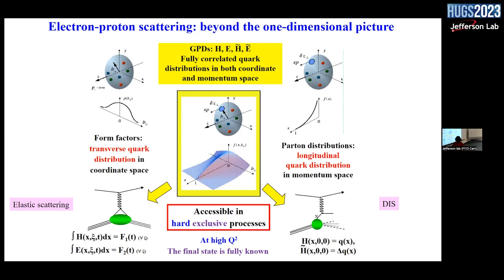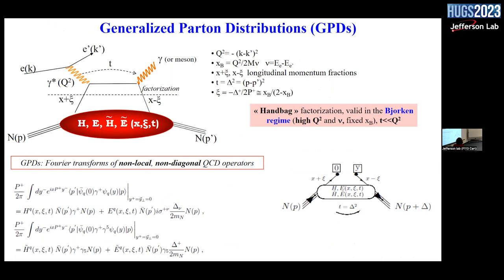GPDs are measured in what is called hard, or deep, exclusive processes. An exclusive process is a reaction in which we fully know the final state — unlike DIS, where we just look at the scattered electron and don't know what happens to the rest. Hard or deep means we are at high Q², high enough to apply QCD factorization and assume interaction on a single quark of the nucleon.